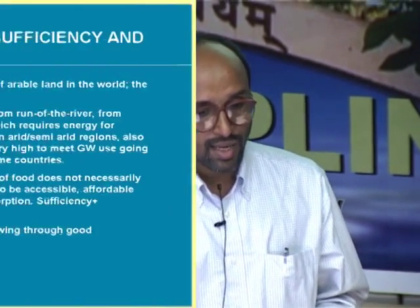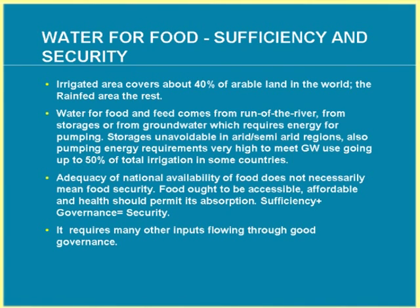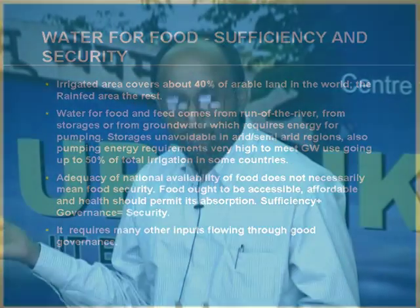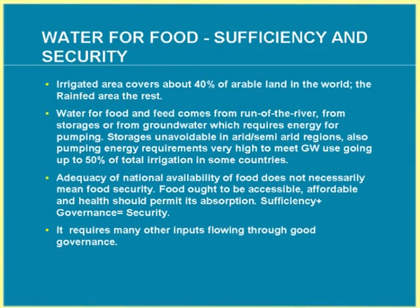If even all these measures are not sufficient, the concept of virtual water becomes relevant: when we import food like wheat or rice from countries like Australia or Canada, we are effectively importing the water needed to produce that food. Water for food sufficiency and security in India requires that irrigated area, which is only about 40%, should be expanded through water harvesting, inter-basin transfer, large-scale groundwater development, or water transfer from one basin to another.